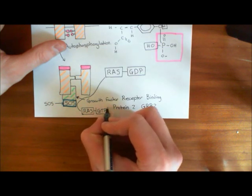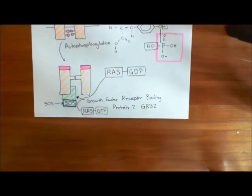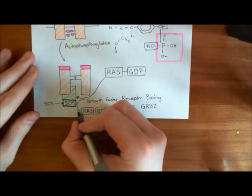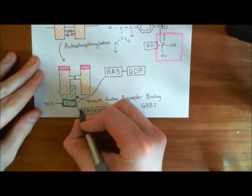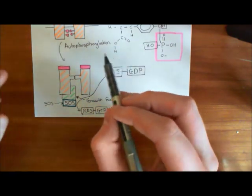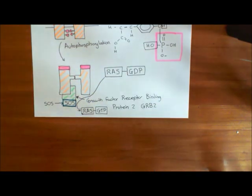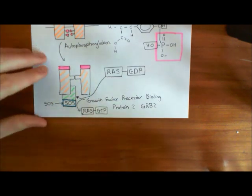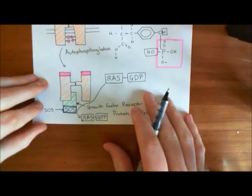So you now have RAS-GTP, and this is the start of our signaling cascade. The binding of growth factor to its receptor has ultimately caused RAS-GDP to be converted into RAS-GTP. Now we'll look at what RAS-GTP does next.